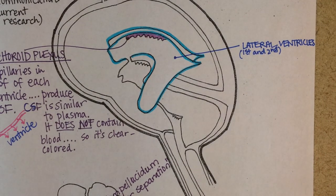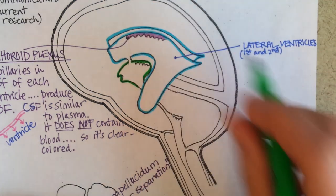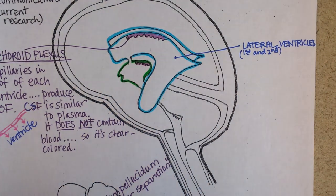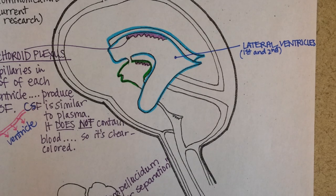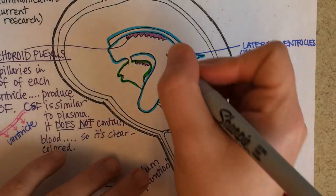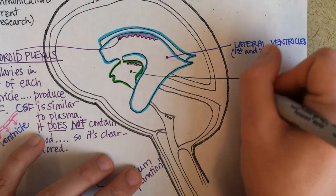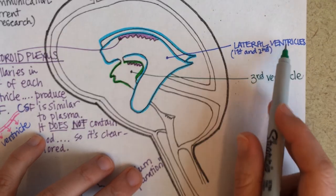Next up is the third ventricle — we're going to use a green highlighter for that. It's located around the thalamus. There's some of it in the right hemisphere and some in the left hemisphere, and the two sides of the thalamus are connected with a little bit of tissue called an isthmus. There's a little bit of fluid in this third ventricle — it's a narrow-walled ventricle. And this is where people ask, well, where are the first and second? Those are the lateral ventricles.